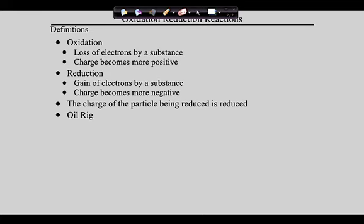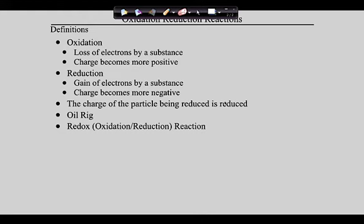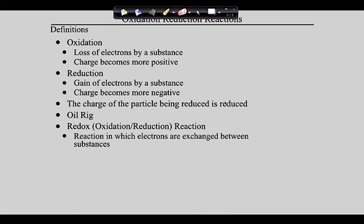Let's bring this together. Oxidation is losing electrons, reduction is gaining electrons. We started by saying you can't have one without the other - if something is oxidized and losing electrons, they've got to go somewhere, and the place they go is where something is being reduced. When we bring these together, we end up with what are called redox reactions - reactions in which electrons are being exchanged.